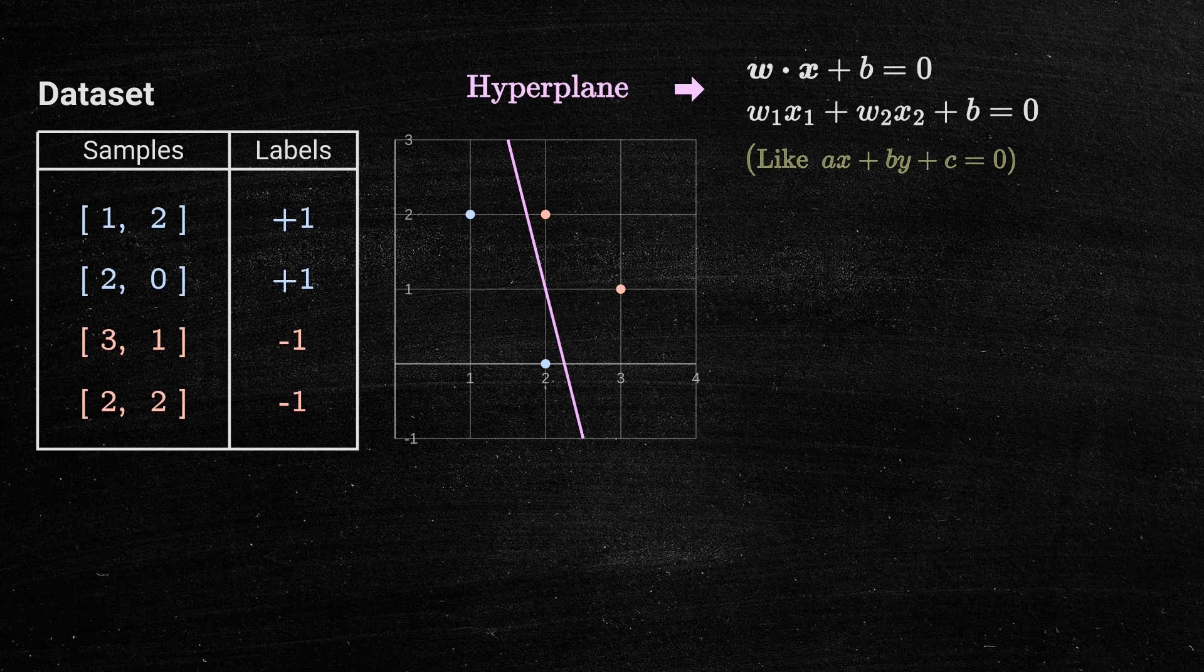Mathematically, we can express this line in general form. We need to determine the vector W and bias term B that define the optimal hyperplane. We start by initializing them to zero.